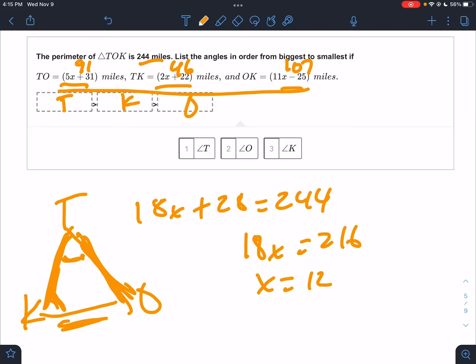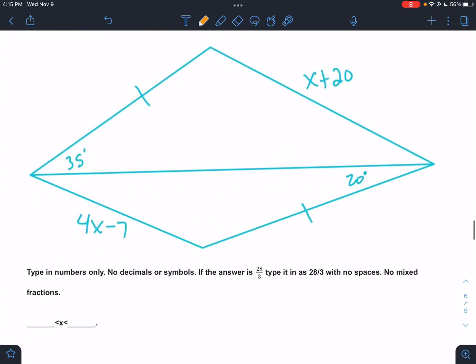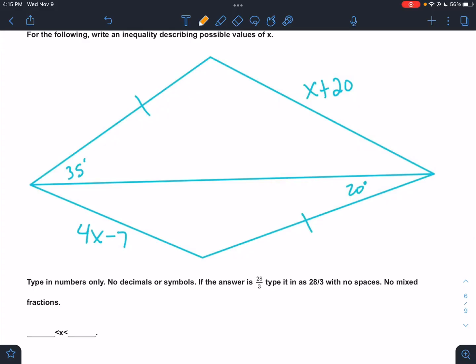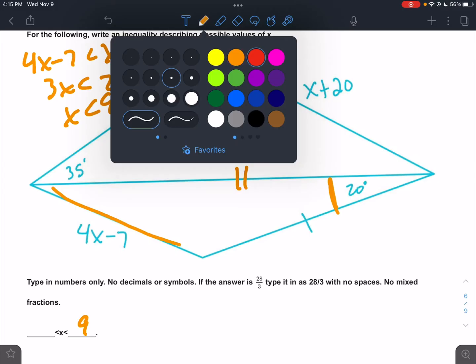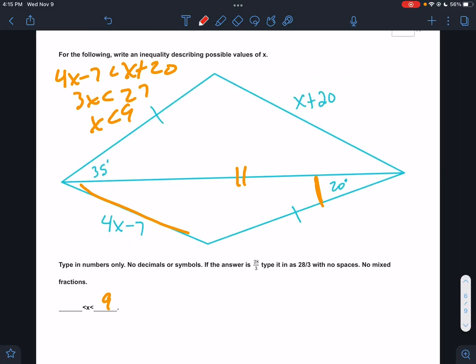Oh man, I'm running low on time. Hinge theorem, I'm definitely going fast guys. We got a shared side here, so the smaller angle produces the smaller side. I know that 4x - 7 is smaller than x + 20, so 3x is less than 27, x is less than 9. That's an upper limit.